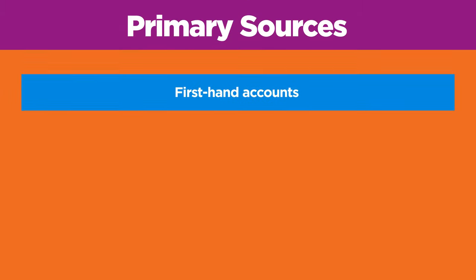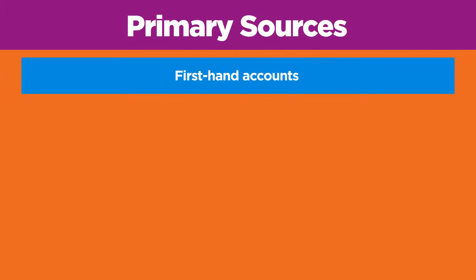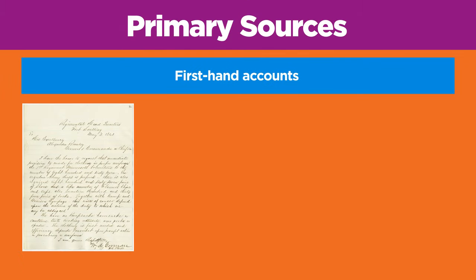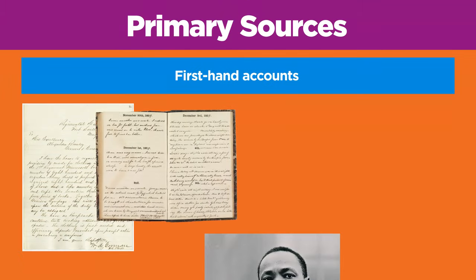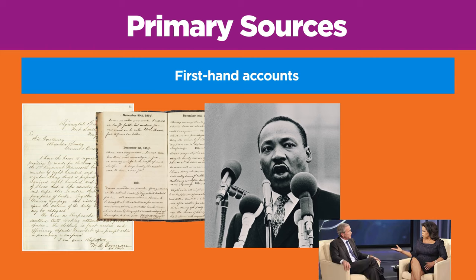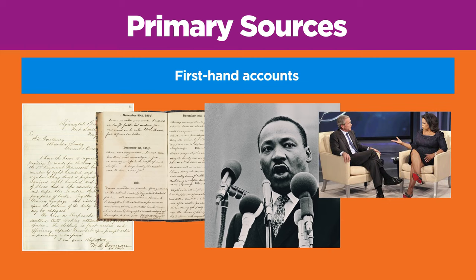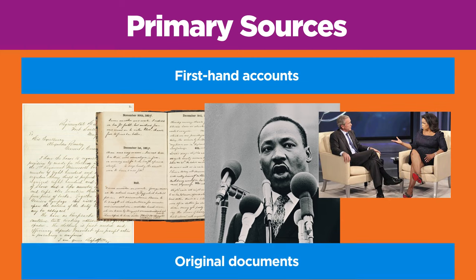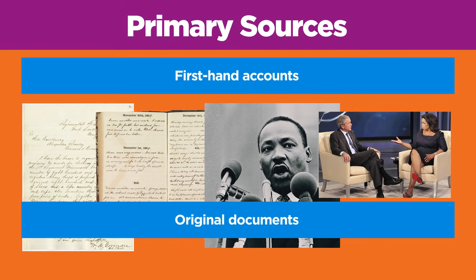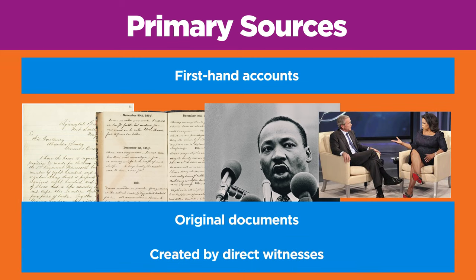Primary sources are first-hand accounts such as letters, diaries, speeches, or interviews. They are original documents created by people who directly witnessed what they're describing — people who were there.